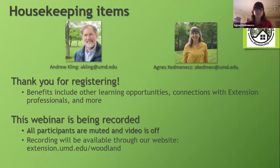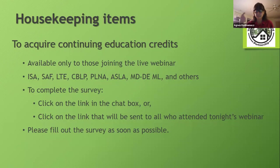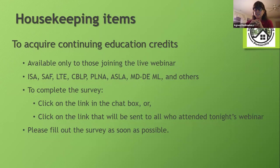The recording can be found at extension.umd.edu/woodland. Continuing education credits are available. At the end of the webinar, we're going to put a link in the chat and you'll click on that link and fill out the survey. Be sure that your name is the same as what's on the screen in the webinar, the same name you used when you registered, and that's the same name you'll put in that survey to get your CECs. That will make it a smooth transition.